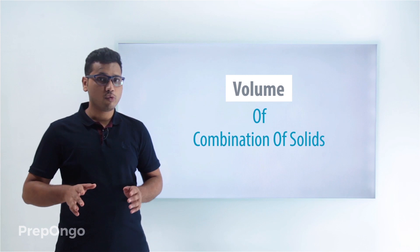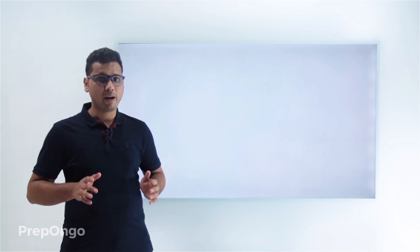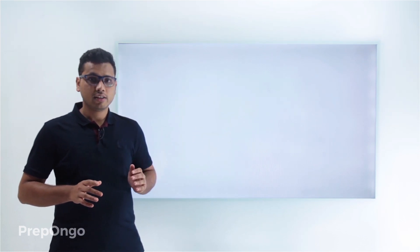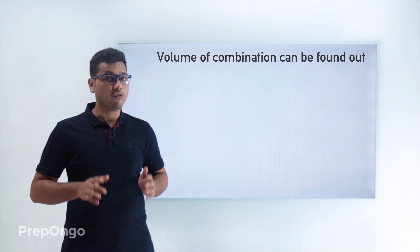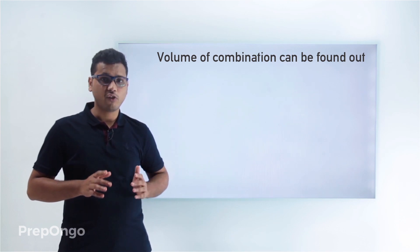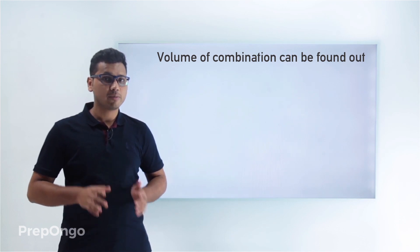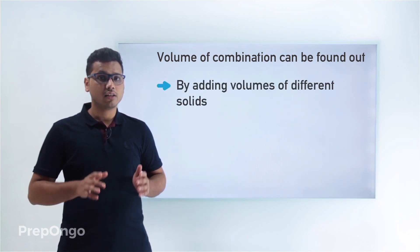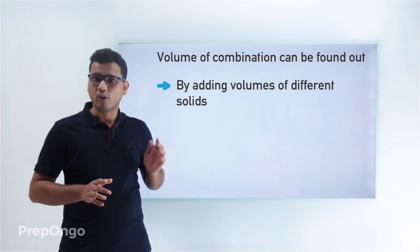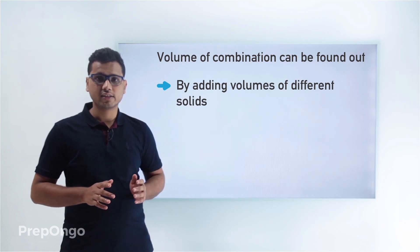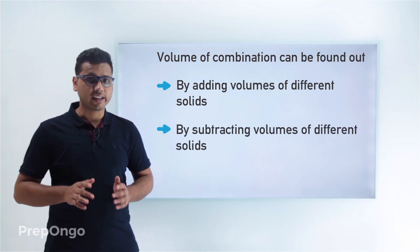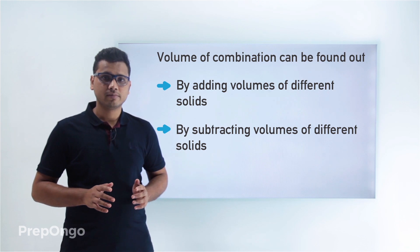When two or more solids are combined to form a new solid, we can calculate the volume of the solid thus formed either by adding the volumes of all those solids or by subtracting the volumes of those solids.